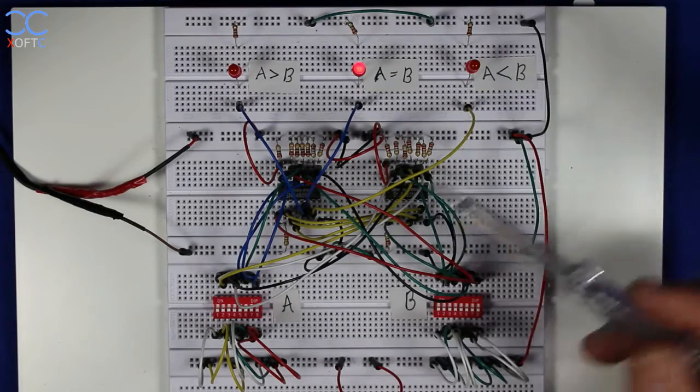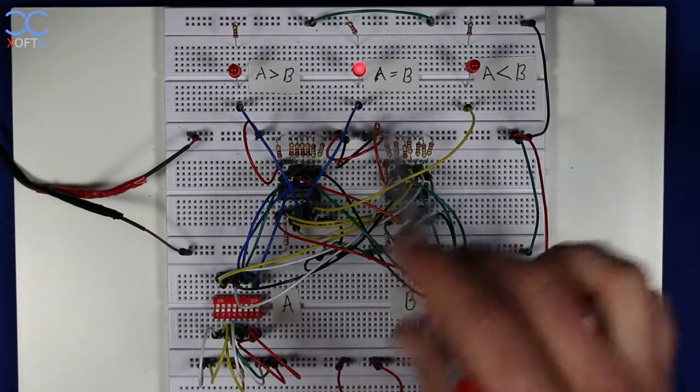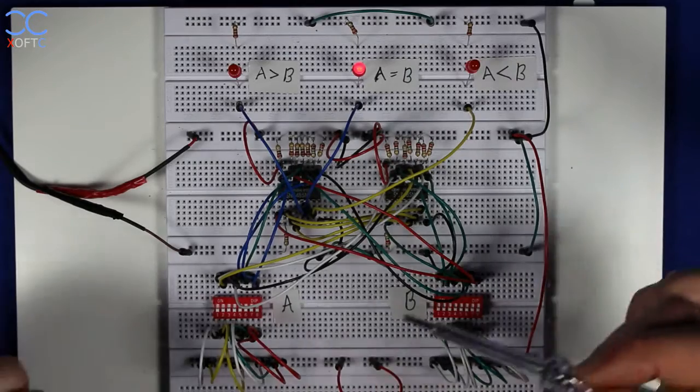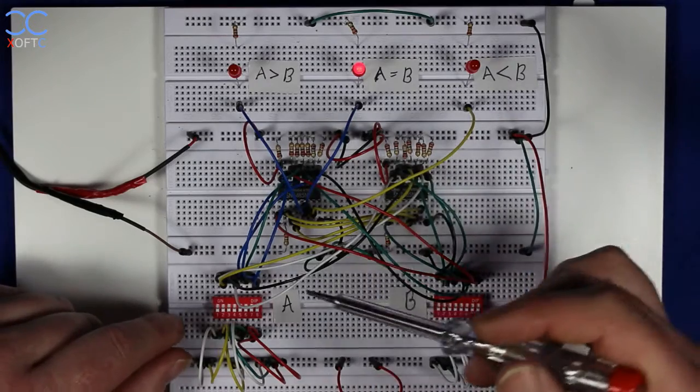So again, not a lot to say about it, so I'm going to show some examples here on how this works. For example, right now we can see that A equals B, and that's because we have zeros on both inputs.